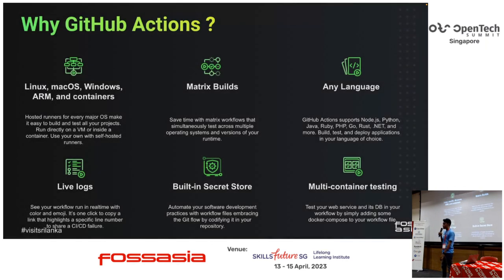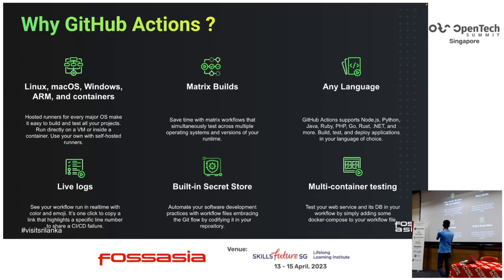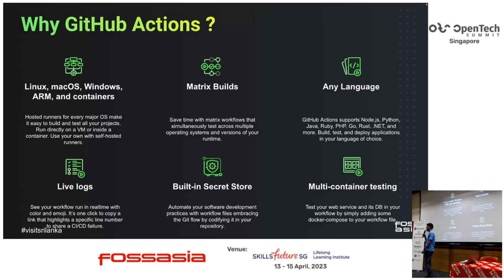Why use GitHub Actions? First, it supports multiple operating systems — Linux, Windows, Mac, and containers. If you are coming from a Docker background, you don't need to go with a VM; you can simply run your CI/CD for containers. With the matrix feature, if you want to test your application on multiple operating systems such as Linux and Windows in parallel, GitHub Actions allows you to do that, so you can save more time.